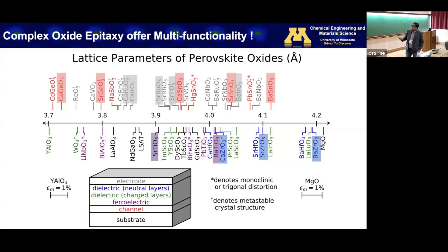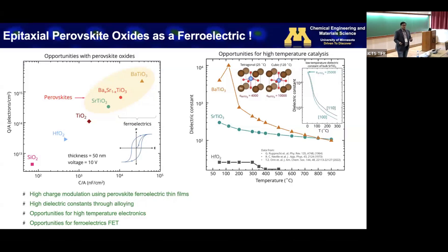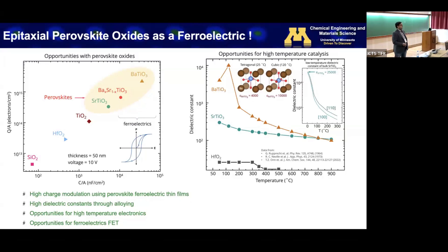That's a really powerful way to integrate functionality of various materials into one heterostructure. Epitaxy is very important. Epitaxial perovskite oxides are also interesting for other applications — for example, some of these complex oxides can induce very large charge density. Showing here is the charge accumulation as a function of capacitance per unit area for a device, and you can see some of these complex oxides are capable of inducing much higher charge density and higher capacitance. That's important for modulation of charges and modulating phases.